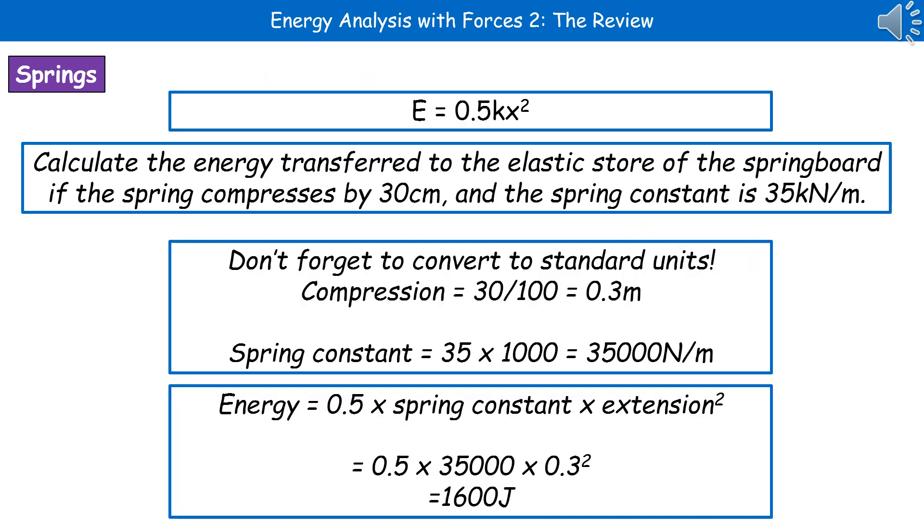An example of the kind of calculation question we could get with regard to springs is given here. Calculate the energy transfer to the elastic store of the springboard if the spring compresses by 30 centimetres and the spring constant is 35 kilonewtons per metre. First thing, you should be noticing that we've got 30 centimetres and 35 kilonewtons per metre. Those are not our standard units. So first thing, convert to standard units. Centimetres into metres and kilonewtons into newtons.